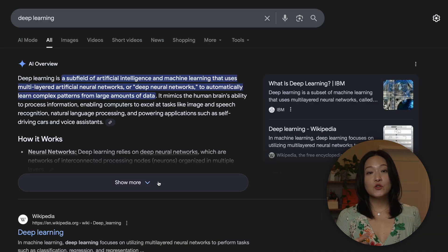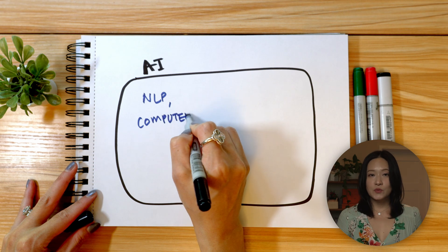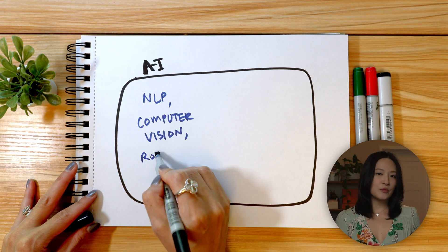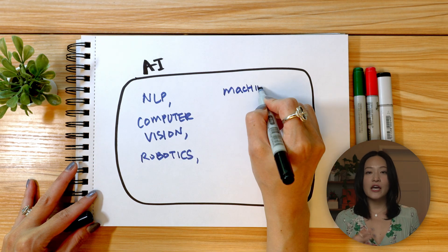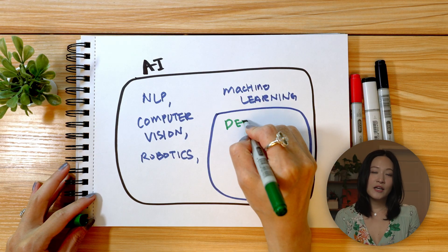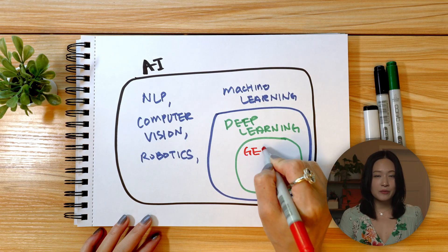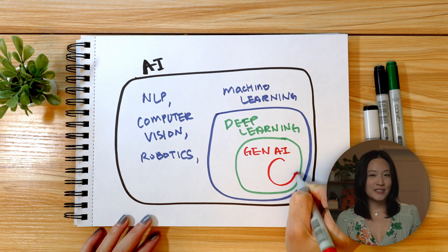And then there's deep learning, a kind of machine learning that uses neural networks. Despite the name, they're not actually related to brains. Deep just means stacking many layers so the computer can learn from a lot of different examples. Think of nested circles where AI is the biggest one. Inside that is NLP, robotics, computer vision, and machine learning. And inside of machine learning is deep learning. And today, when most people say AI, they're usually talking about generative AI, which is the smallest circle in this example.